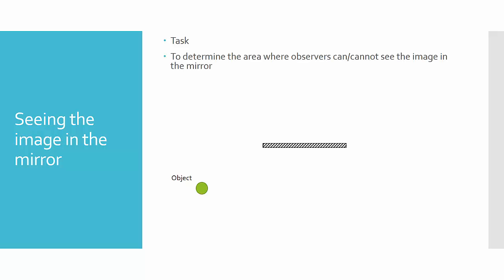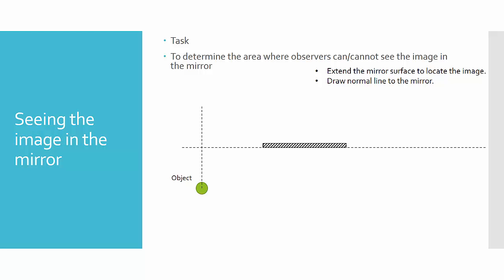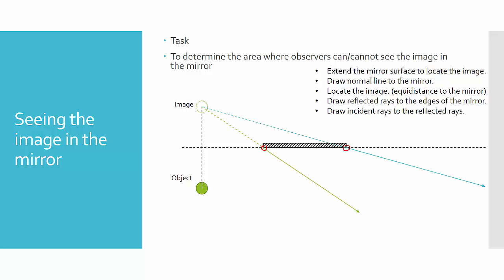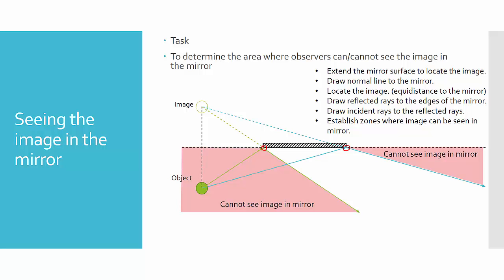Another type of question is to determine the area where the observer can or cannot see the image in the mirror. There are no observers here — you determine where, if an observer is placed, they can or cannot see the image of the object. First, extend the mirror surface to locate the image, and draw the normal line to the mirror. This is where the image will be — equidistant to the mirror on the normal line. Then draw the reflected rays to the edges of the mirror, one on each side, and draw the incident rays to the reflected rays. Establish the zones: the red area is where you cannot see the image, and the other zone is where you can see the image in the mirror.